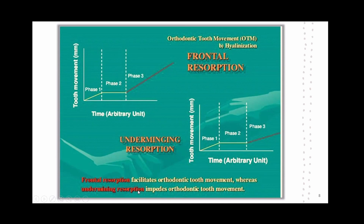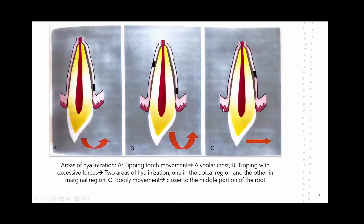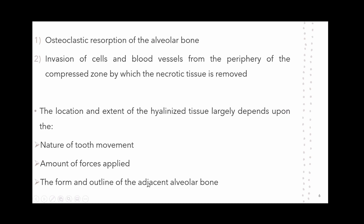Undermining resorption occurs when forces applied are so heavy that blood vessels of the periodontal ligament become occluded, causing necrosis and hyalinization of the periodontal ligament. Resorption occurs from the underside of the lamina dura, hence the name undermining, and it does not favor orthodontic tooth movement. Finally, regarding the form and outline of the adjacent alveolar bone, areas of bony prominences have more areas of hyalinization compared to non-bony prominences.